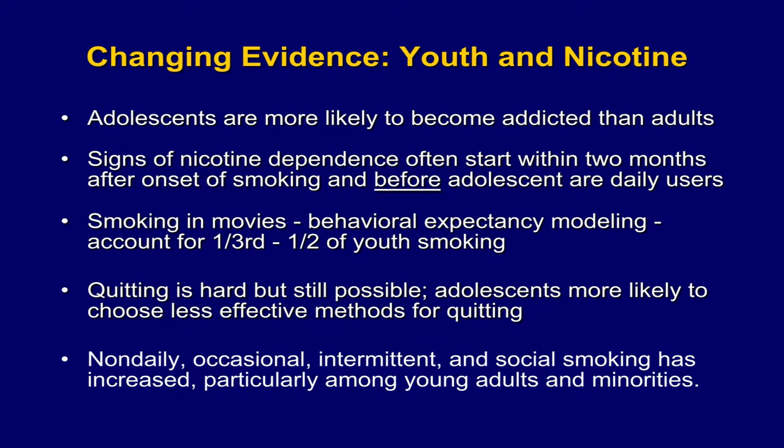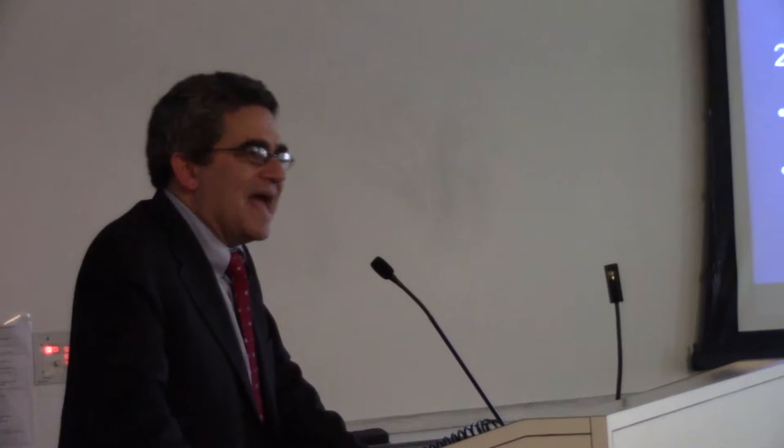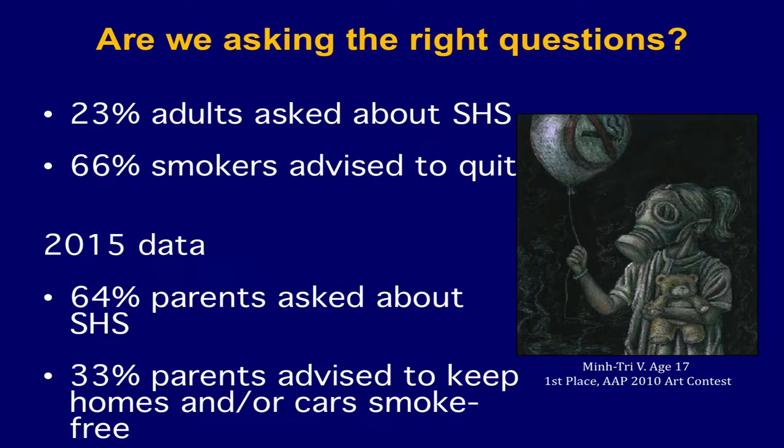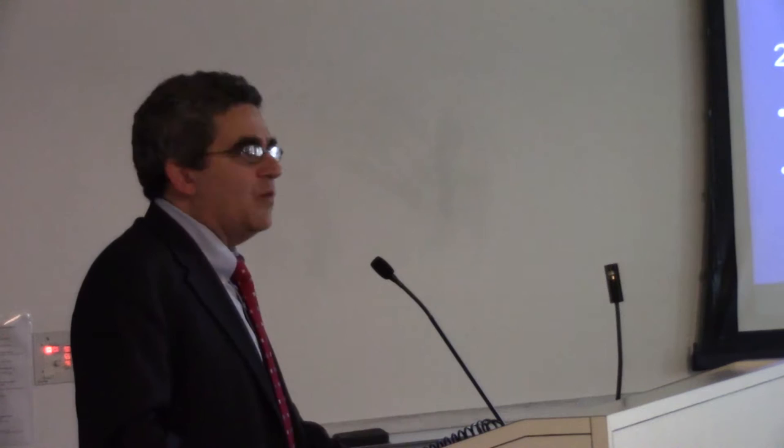Quitting is hard but still possible. Adolescents are more likely to choose less effective means for quitting. The definition and surveillance is getting harder. Non-daily, occasional, intermittent, social smoking has all increased, especially among young adults and ethnic minority groups. Are we asking the right questions? From a clinical perspective, only 23% of adults in the U.S. who saw a clinician were asked about secondhand smoke. Only two-thirds of adult smokers were advised to quit. In 2015, about two-thirds of parents were asked about secondhand smoke exposure of their children, and only one out of three were advised to keep their homes and cars smoke-free.